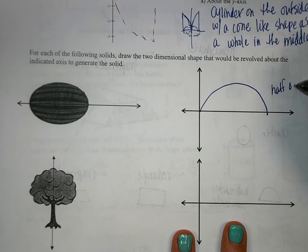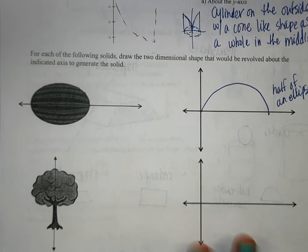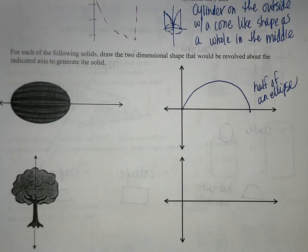So half of an ellipse. And also, I mean, since watermelons aren't exact, it could actually be an oval, but we're just going to stick with ellipse for now.